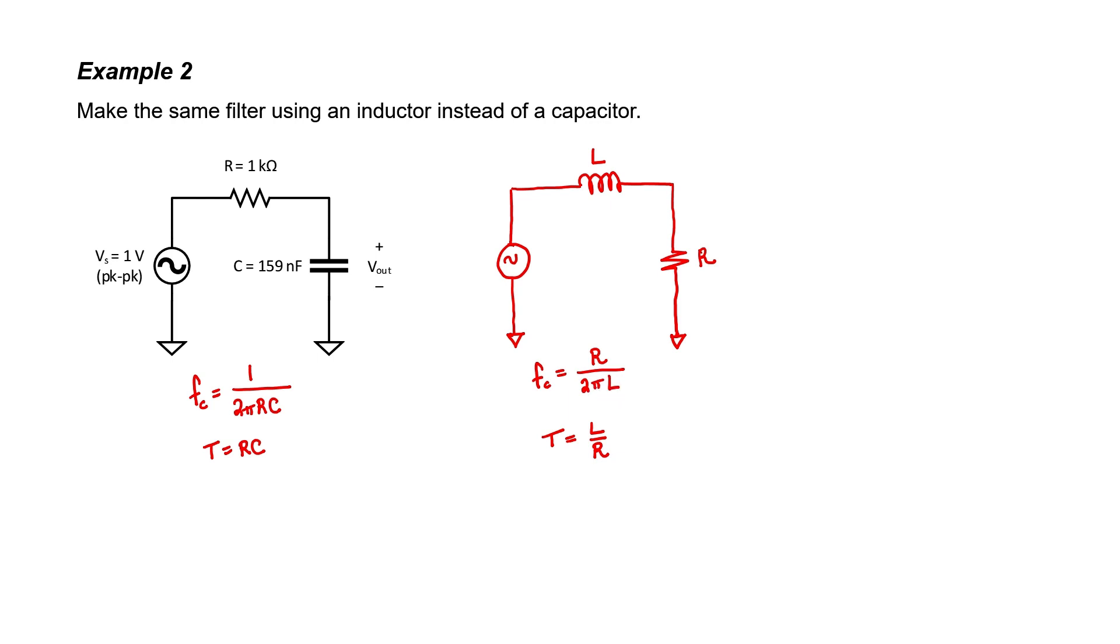We know that for the filter to behave the same in each of the two cases, the time constants have to equal one another. For the sake of having some value to choose, I'm going to assume that the two resistors are the same and then we'll calculate the inductance. We wind up with an inductance of 159 millihenries.